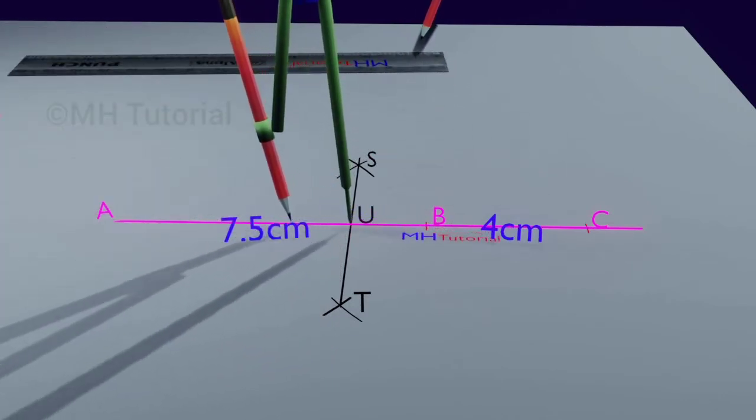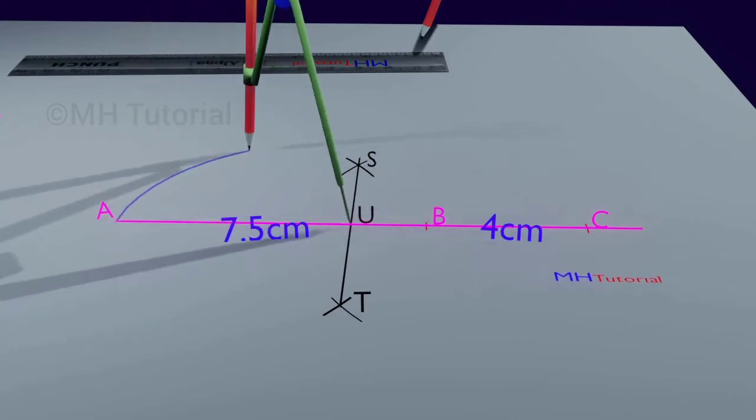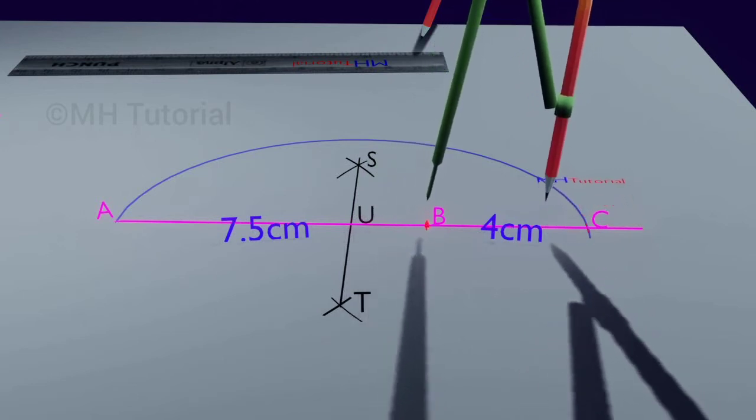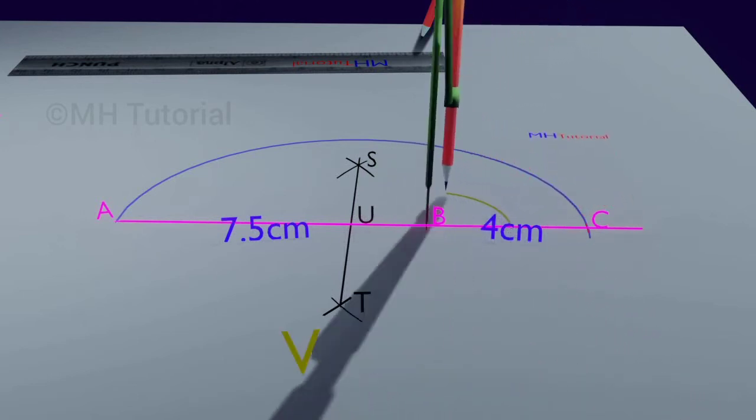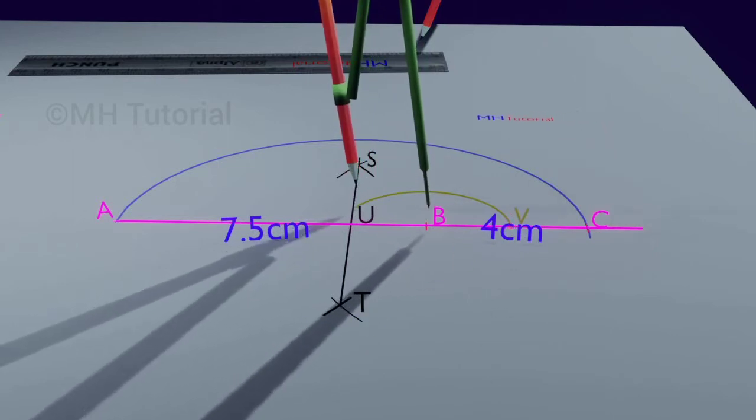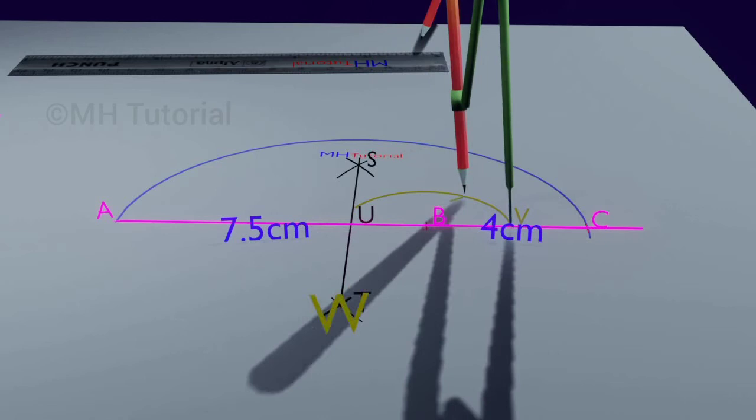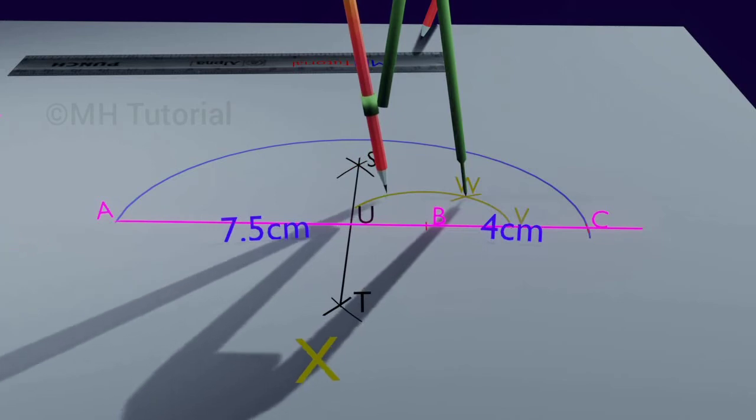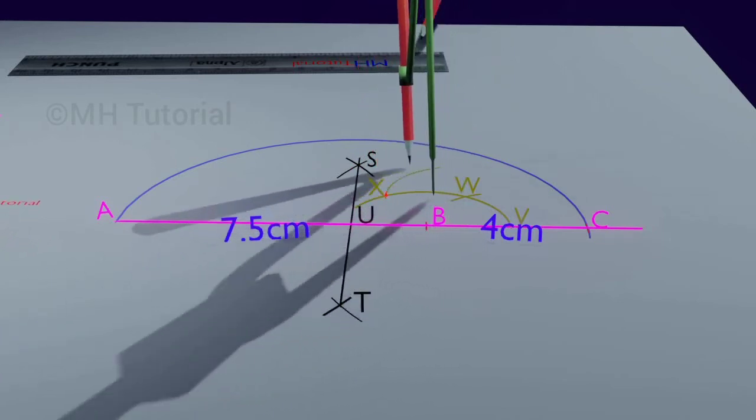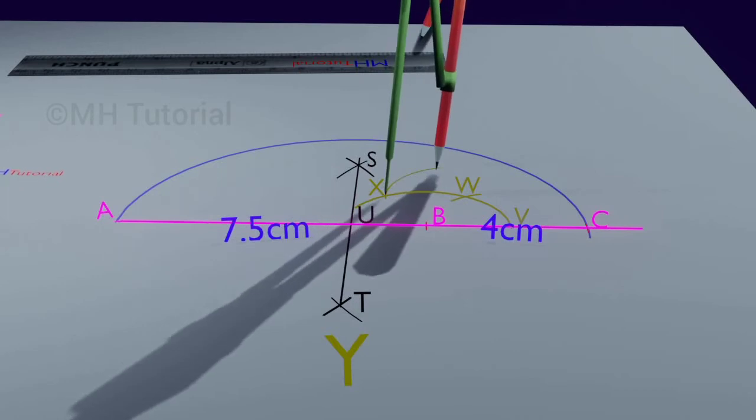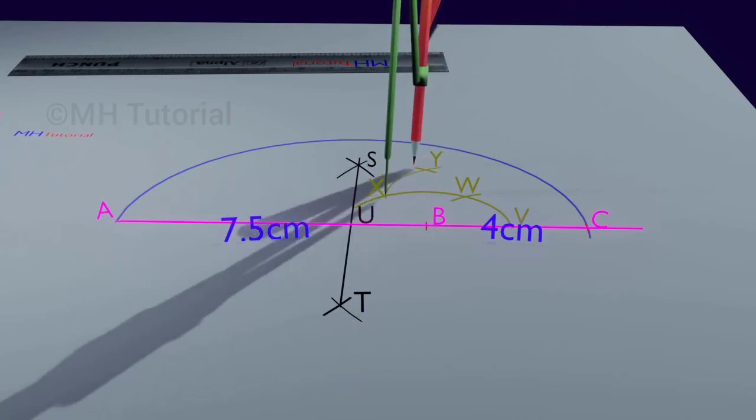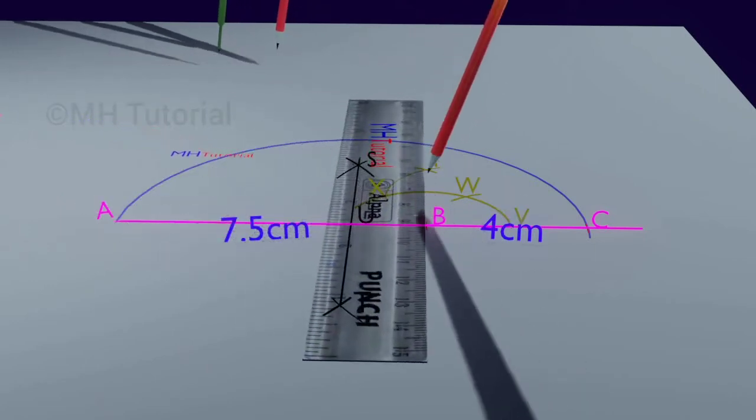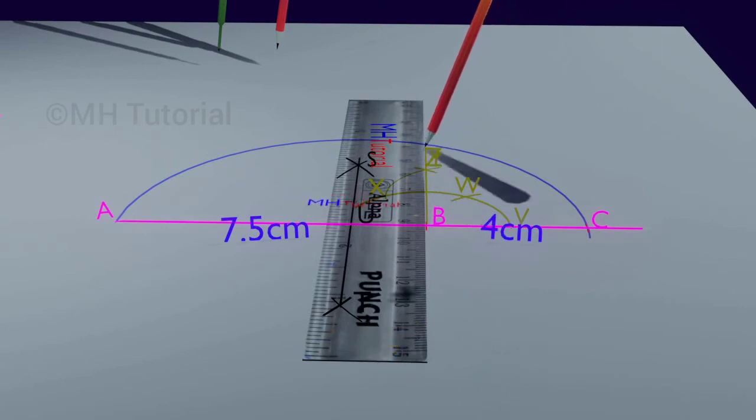A semicircle of radius UA is drawn taking point U as the center of it. Next we will draw perpendicular at point B. Take notes on the procedure and the steps in the drawing. The length of this perpendicular line inside the semicircle will be the square root of 30. This perpendicular intersects the semicircle at the point Z.